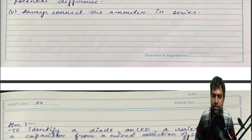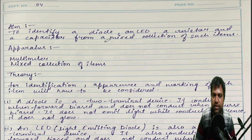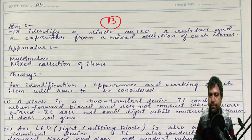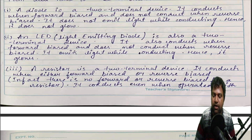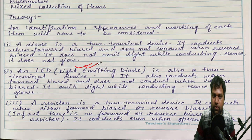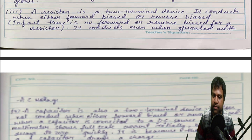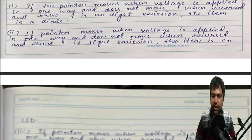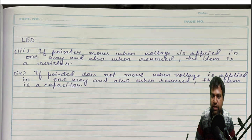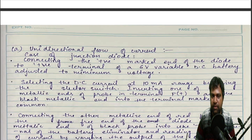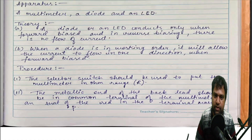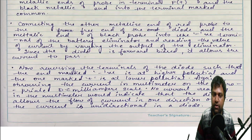Now Section B starts. The activity is to identify a diode, LED, resistor, and capacitor from a mixed collection of such items. Using a breadboard, you can identify them — a diode or LED will work/glow when in forward bias condition. Connect them on a breadboard, draw the circuit diagram, and write your inference and conclusion. If some tabulation or data is needed, make a simple small table.